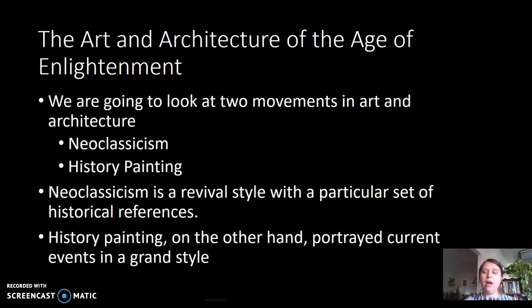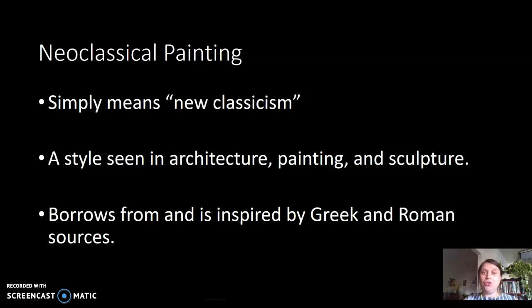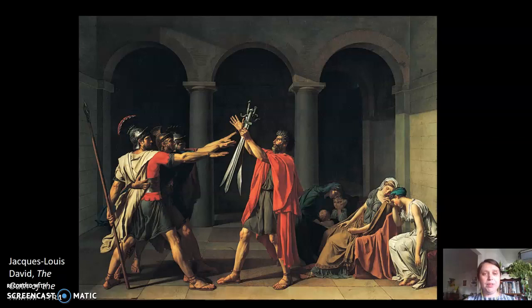Neoclassicism is a revival style—a kind of throwback style that is playing with and reviving a set of historical references. History painting depicts current events in a very grand and dramatic style. Neoclassicism simply means 'new classicism,' and the 'classic' in classicism refers to Greek and Roman sources. That's the style being revived with neoclassicism, and we see it in architecture, painting, and sculpture. This is just to give us a sense of the visual style—we'll do a full analysis of this painting together in class.